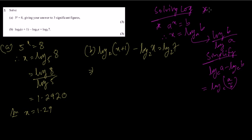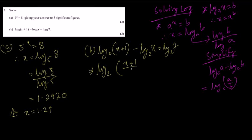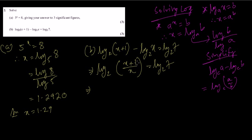We need to make it into the simplest format, and only then we can solve it. The solving formula is: log base a of x equals b, therefore x equals a to the power b. So log base 2 of (x plus 1 divided by x) equals log base 2 of 7. Since both sides have the same base, we can directly write x plus 1 divided by x equals 7.